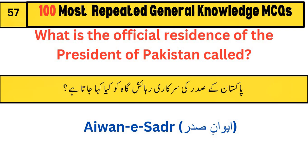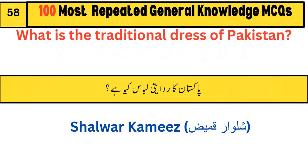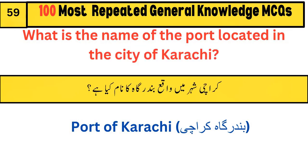What is the official residence of the President of Pakistan called? Aiwan-e-Sadr. What is the traditional dress of Pakistan? Shalwar Kameez.